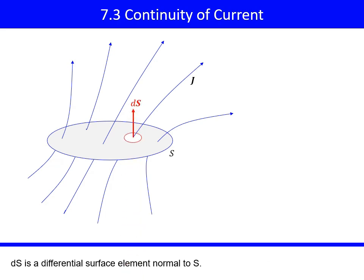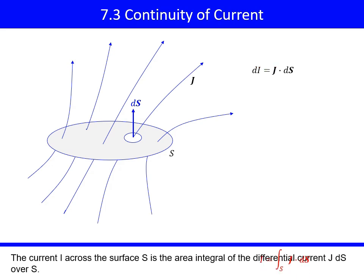DS is a differential surface element normal to S. The differential current dI that flows through DS is the inner product of J and DS. The current I across the surface S is the area integral of the differential current J·dS over S.